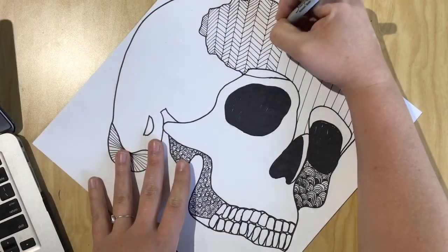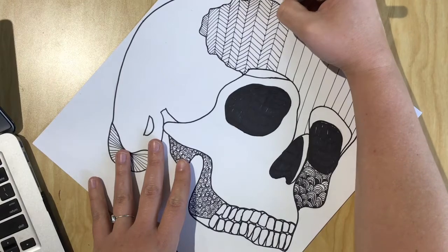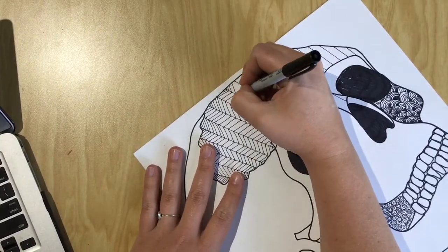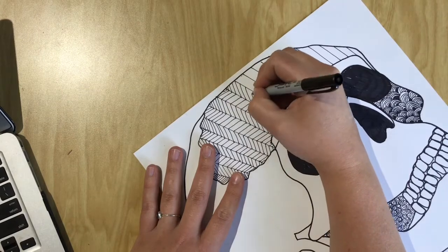So I want to keep in mind that some of your spaces are really large so they're going to take quite a bit of time to fill. So you might want to choose patterns that aren't as intricate for those bigger spaces. Now this is something that you can continually work on.